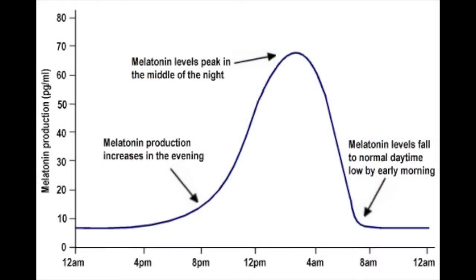A major hormone involved in circadian rhythms is melatonin. This is secreted in different amounts during the night and day. Melatonin secretions peak during the nighttime, which makes you feel drowsy. While it does not necessarily induce sleep, it can promote sleep and allow a good night's rest.